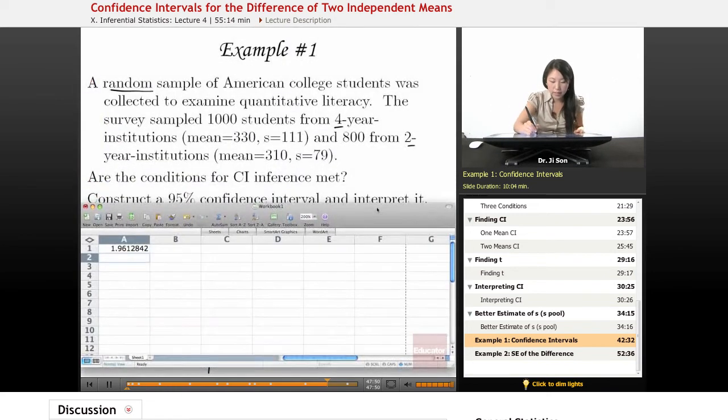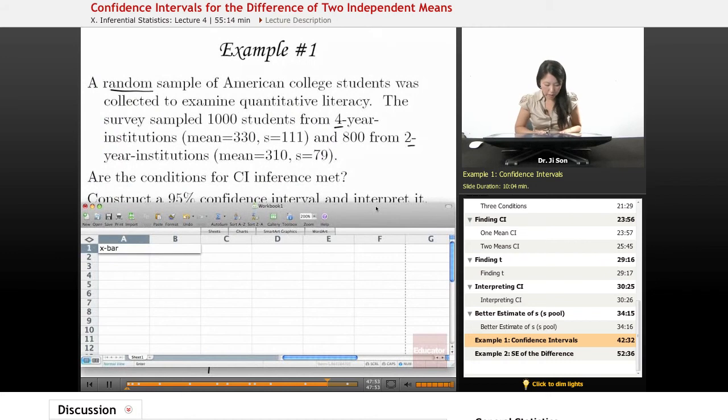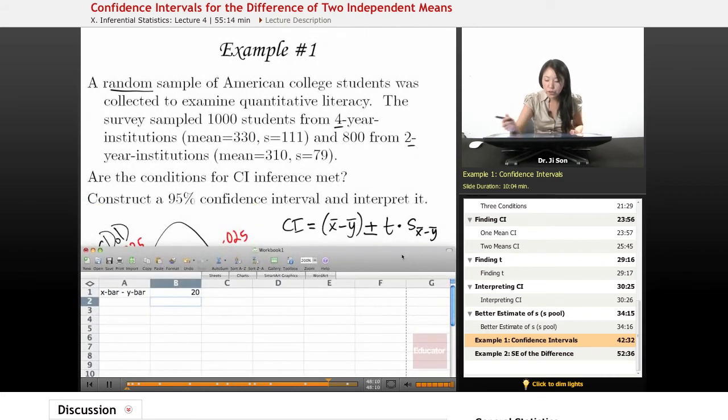So x-bar minus y-bar, that's going to be 330 minus 310. Oh, I didn't need the calculator to do that. And let's also, while we're at it, try to figure out the standard error of S-dot, which is S sub x-bar minus y-bar. So what I'm trying to do is find this guy.